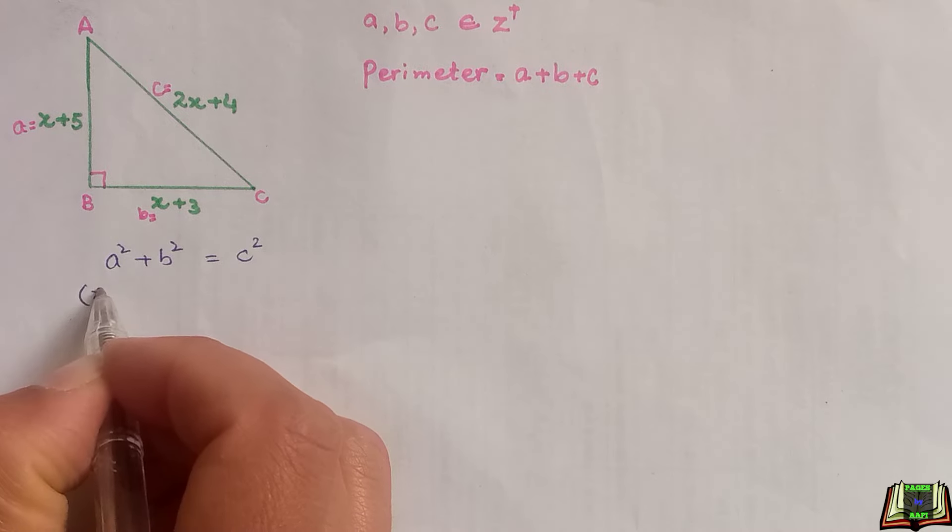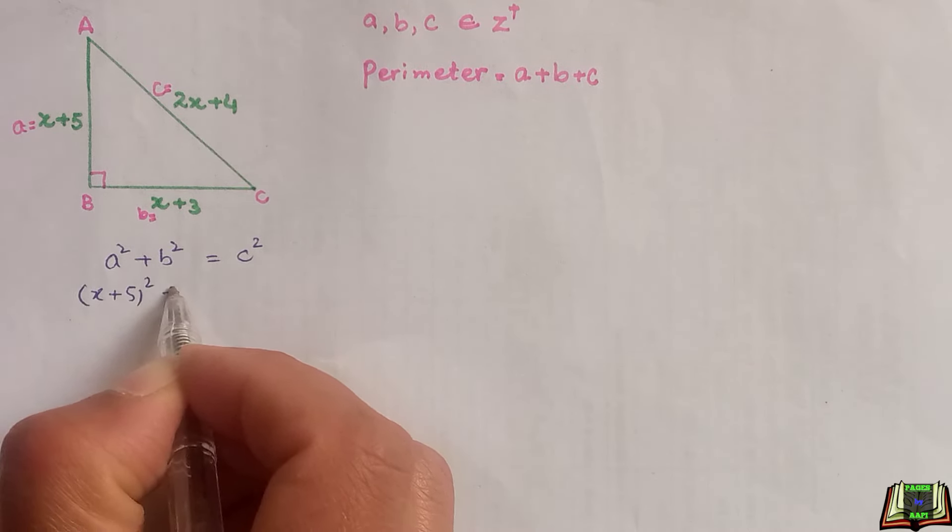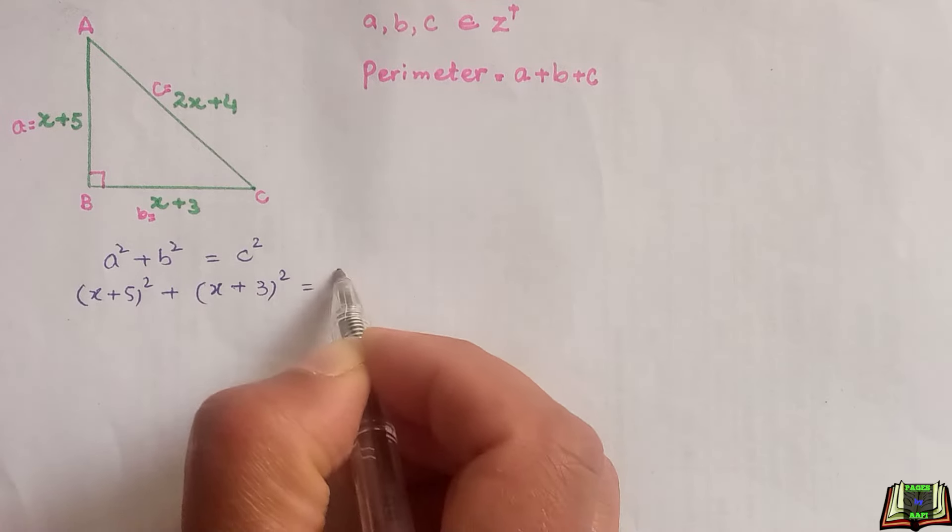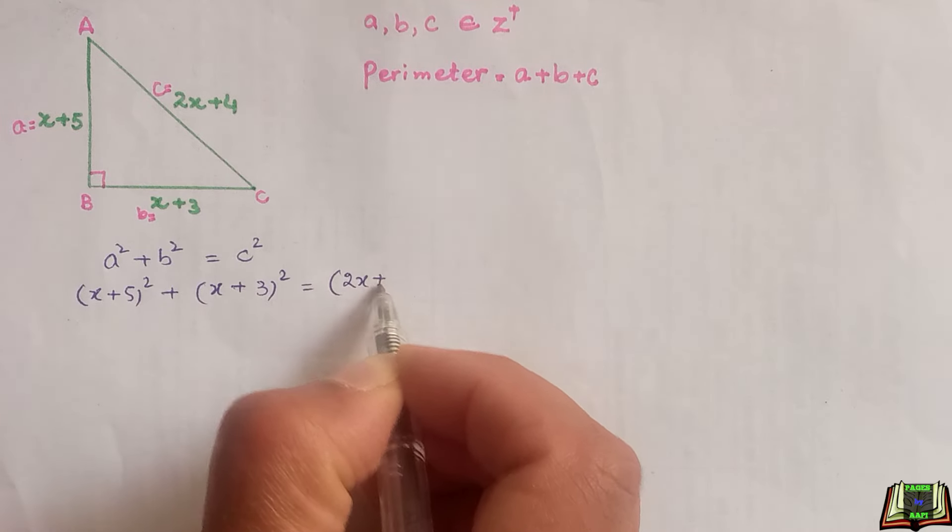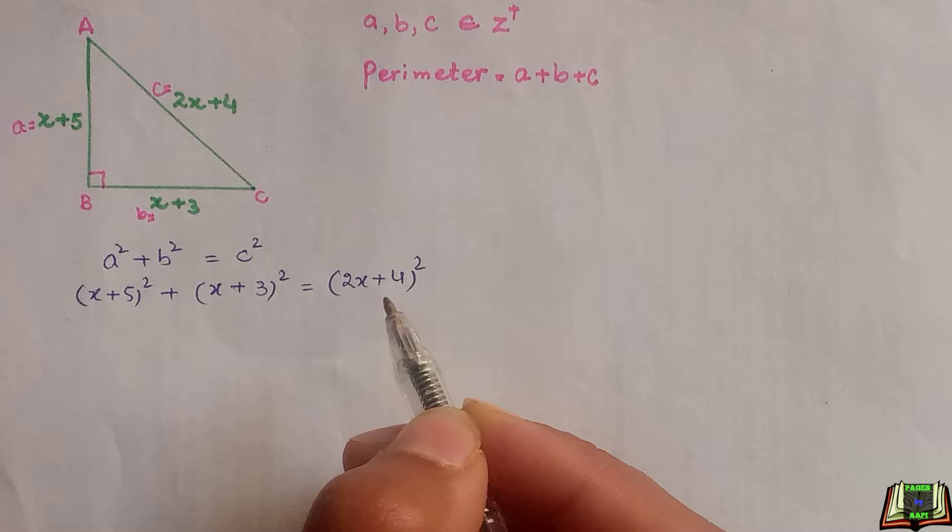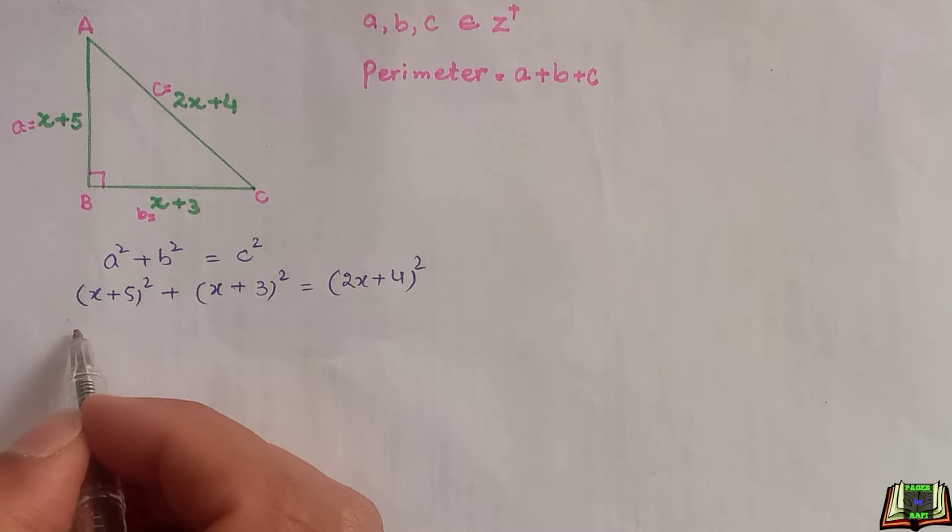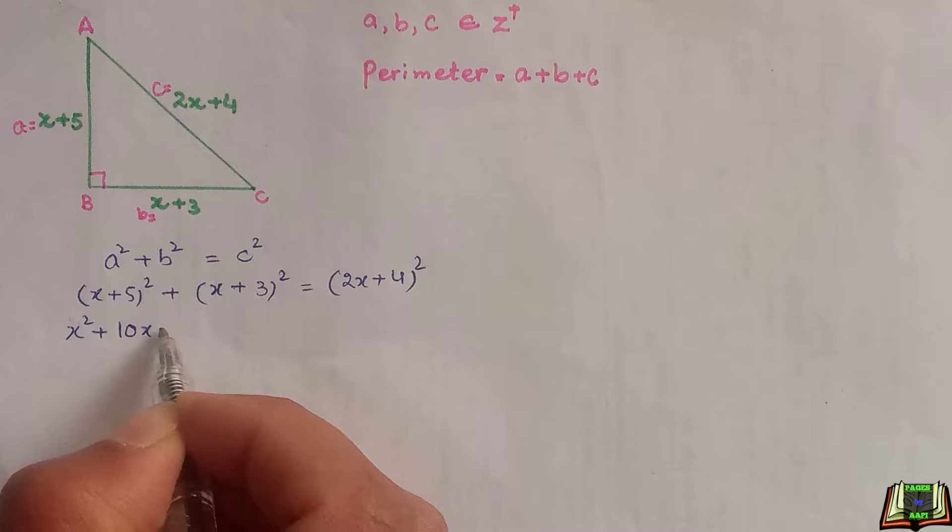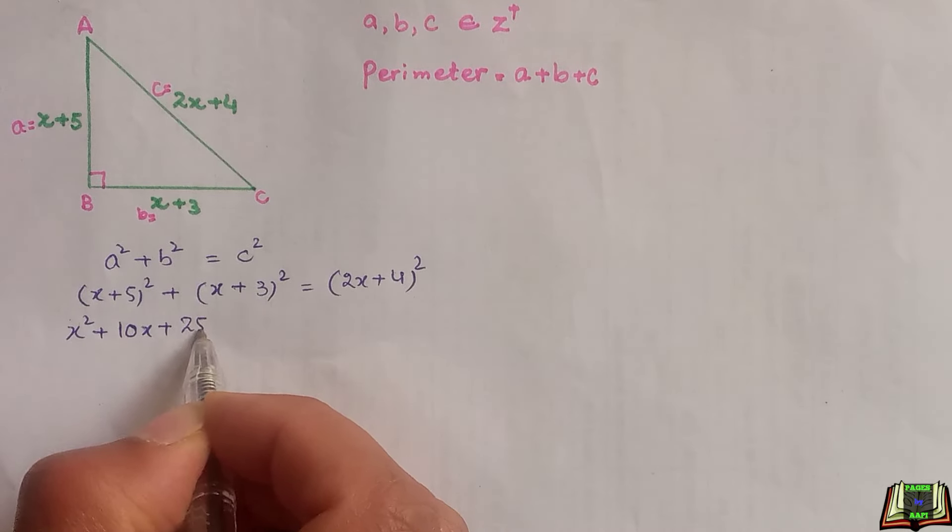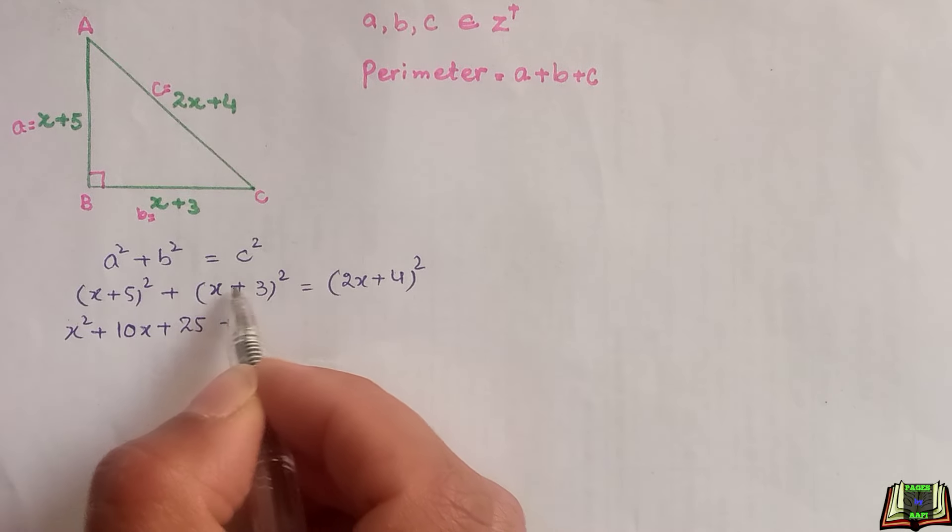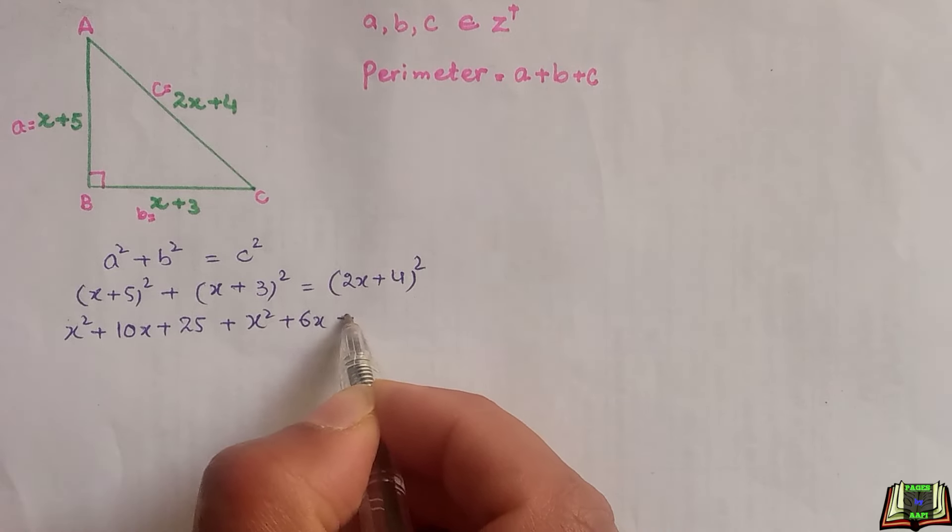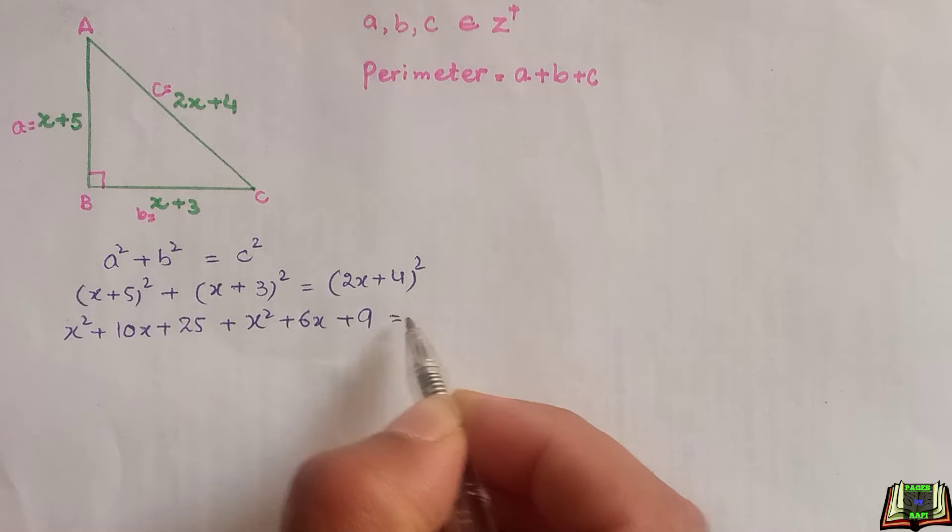Putting the values of a, b, and c: (x+5) squared plus (x+3) squared is equal to (2x+4) squared. x squared plus 10x plus 25, and square of (x+3) is equal to x squared plus 6x plus 9. Taking the square of (2x+4), the value is equal to 4x squared plus 16x plus 16.